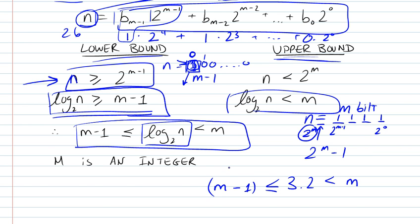Knowing that m can only be an integer because it represents the number of bits in the representation of n, you'll see that m in this case can only be 4. Try replacing it with any other value, it won't work.